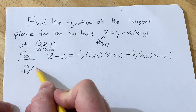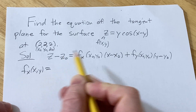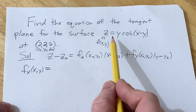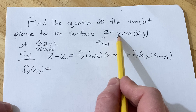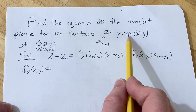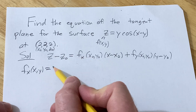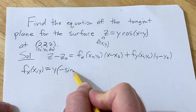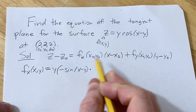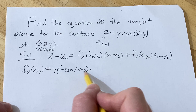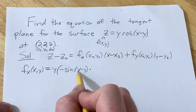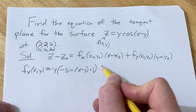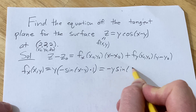The partial derivative with respect to x: when you're taking the partial with respect to x, you treat all the other variables as constants. So the y hangs out, and the derivative of cosine is negative sine, so it's negative sine of x minus y, times the derivative of the inside function by the chain rule. The derivative of x is 1 and the derivative of y is 0, so this cleans up to negative y sine of x minus y.